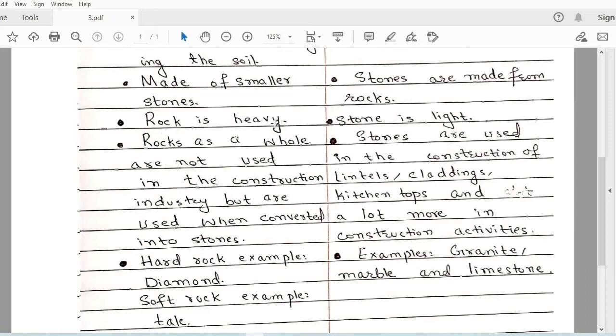Rock is heavy compared to the stone. Rock is naturally occurring and it is a huge material, that's why it is heavy. And stone is obtained from the rock, means it's a piece of the rock. So that's why it is light in weight as compared to rock.